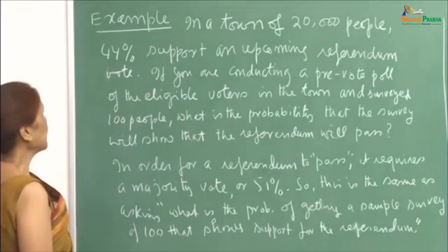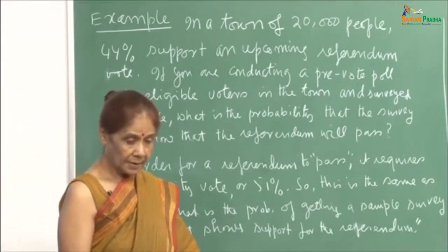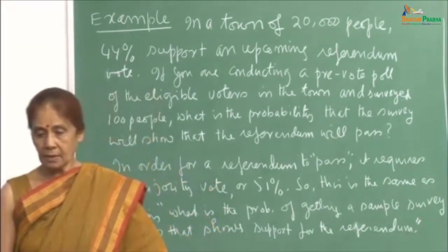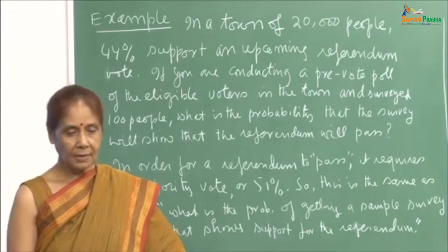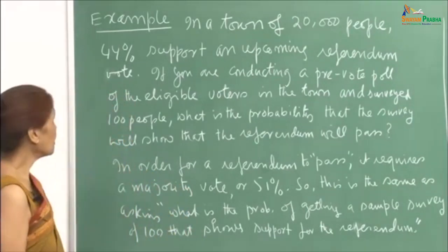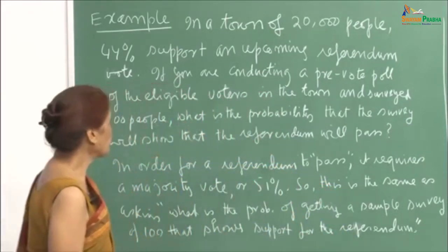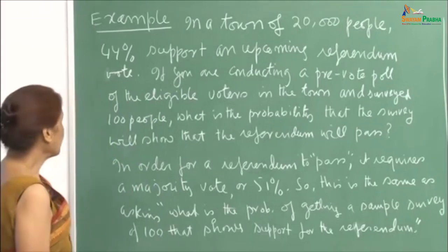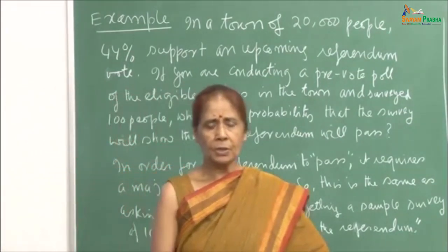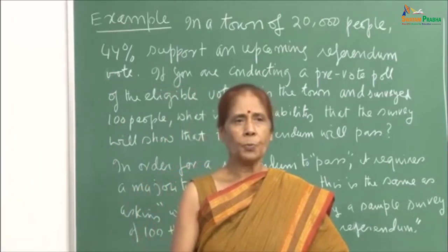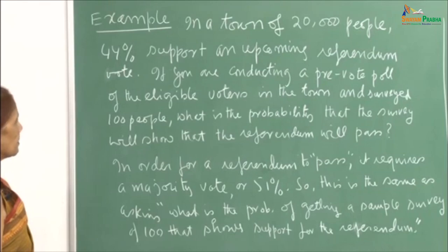The next interesting example: in a town of 20,000 people, 44 percent support an upcoming referendum vote — for example, whether Anna Hazare should form a political party. You conduct a pre-vote poll. This happens very often; media persons and magazines conduct pre-vote polls to get a feeling for the opinion of eligible voters in the town. Suppose you survey 100 people. What is the probability that the survey will show that the referendum will pass?